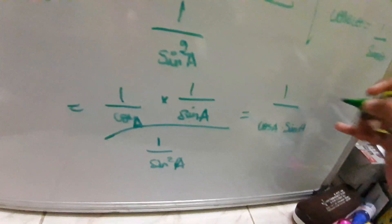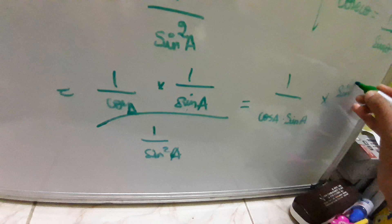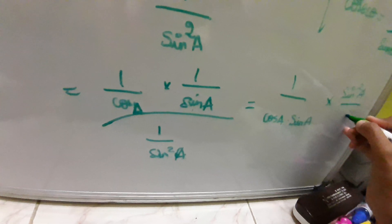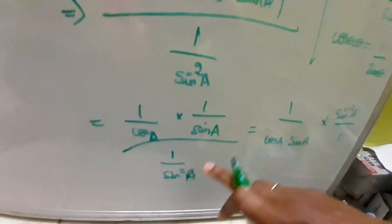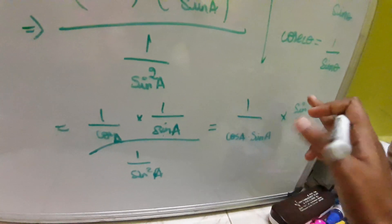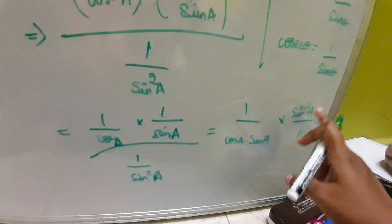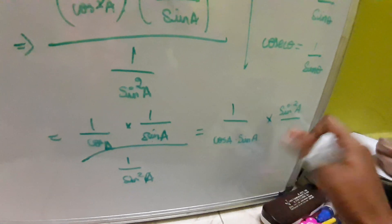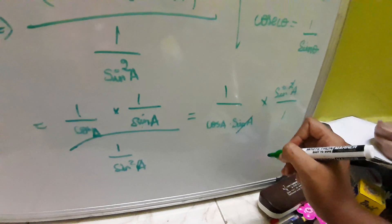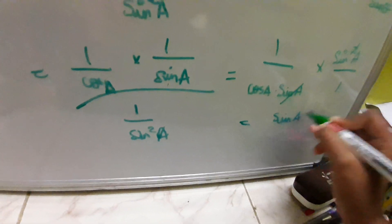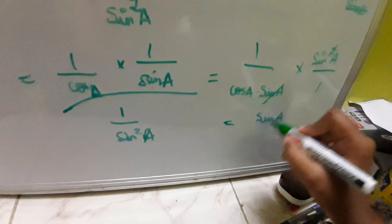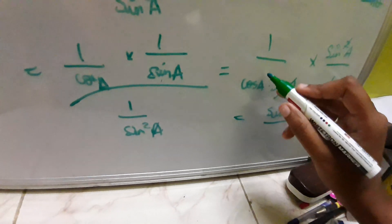The denominator 1 by sin squared a goes to the numerator as its reciprocal — when division becomes multiplication, it becomes reciprocal. So we have 1 by cos a sin a, multiplied by sin squared a by 1. Now sin squared a and sin a cancel, leaving sin a remaining, divided by cos a.